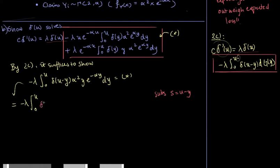What you get is just delta of s multiplied by alpha squared and then you have y where by this substitution y is equal to u minus s and then you have e to the minus alpha u multiplied by e to the minus alpha s ds.